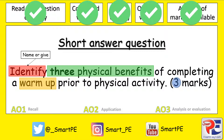As this question asks you to identify — name or give — three physical benefits, you are going to be achieving assessment objective one, which is where you recall some facts about the particular topic, a warm-up in this question. It's also important to note from the qualifier that it's asking for three benefits, but specifically three physical benefits. So what is going to happen physically to the body when completing a warm-up? In order to get three marks, you need to identify or name three different physical benefits.